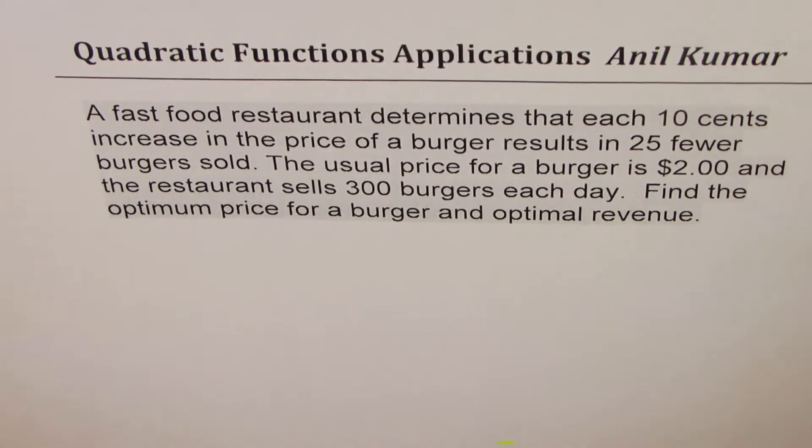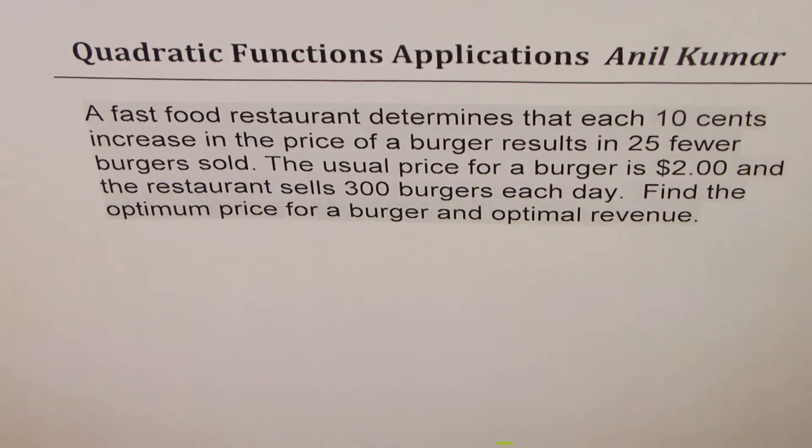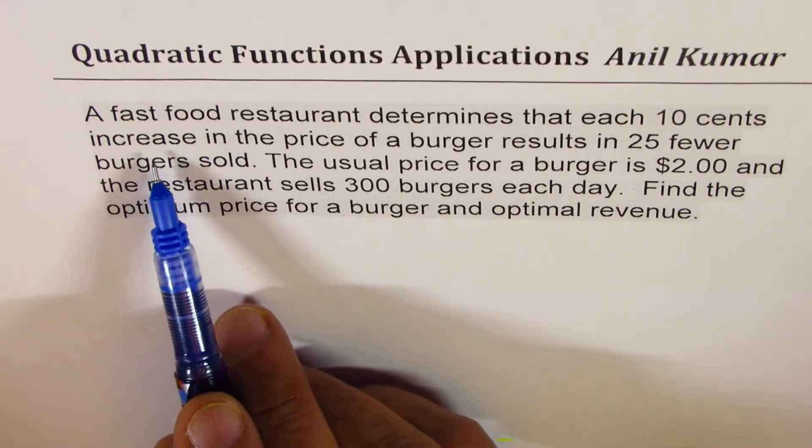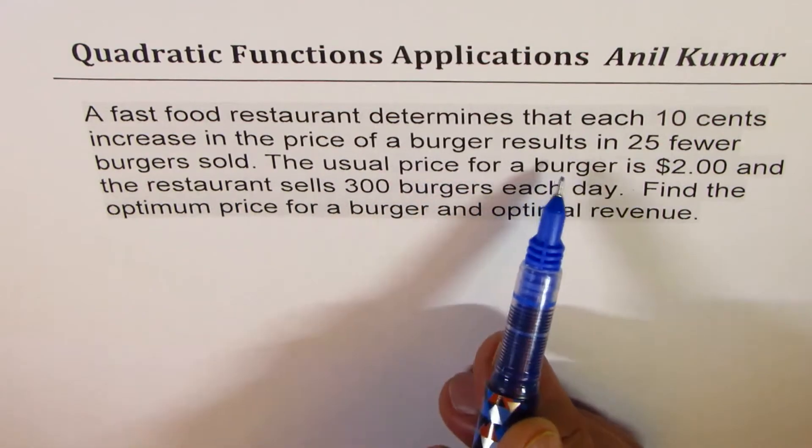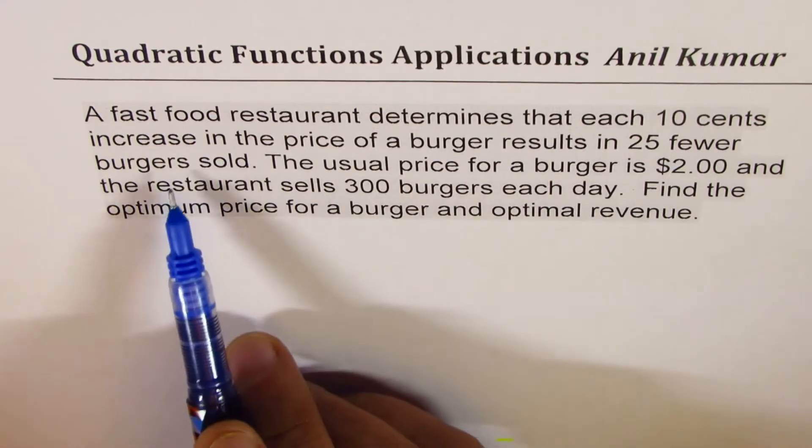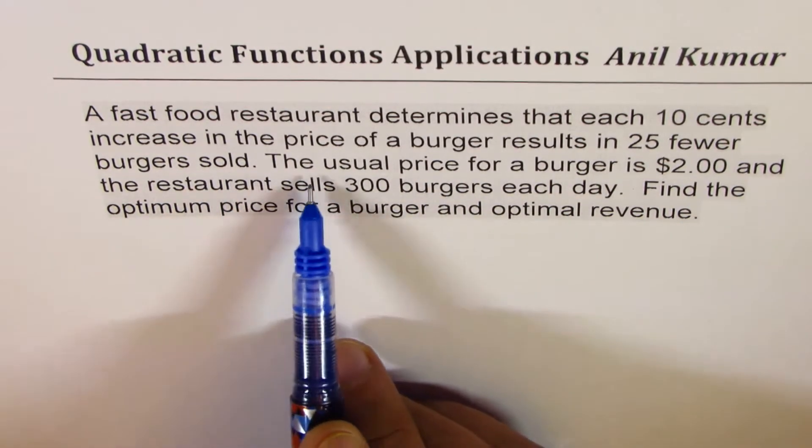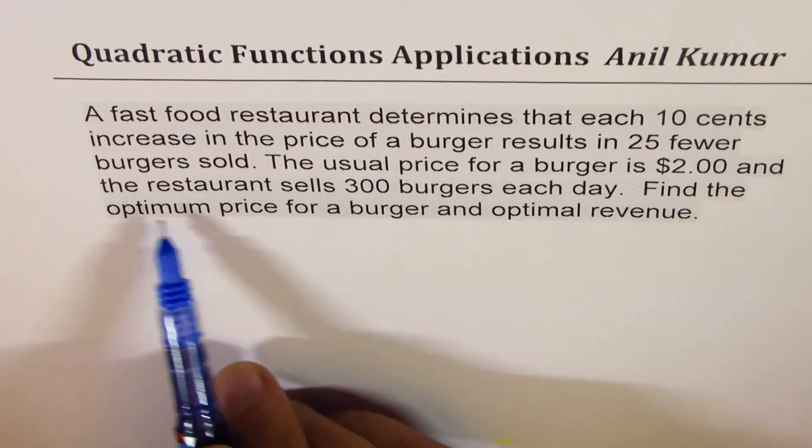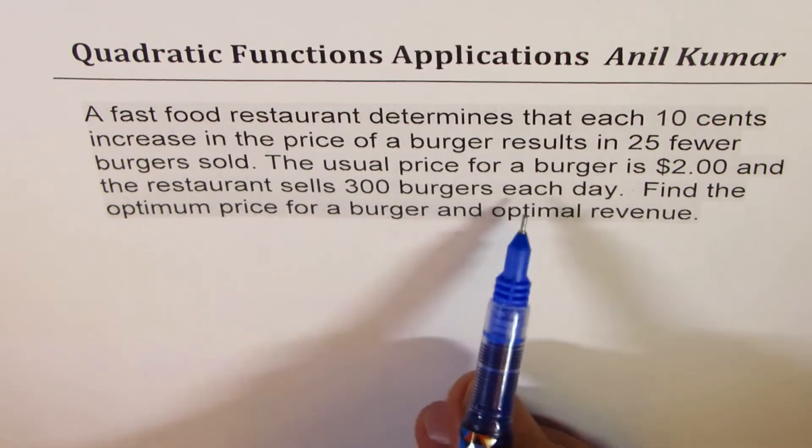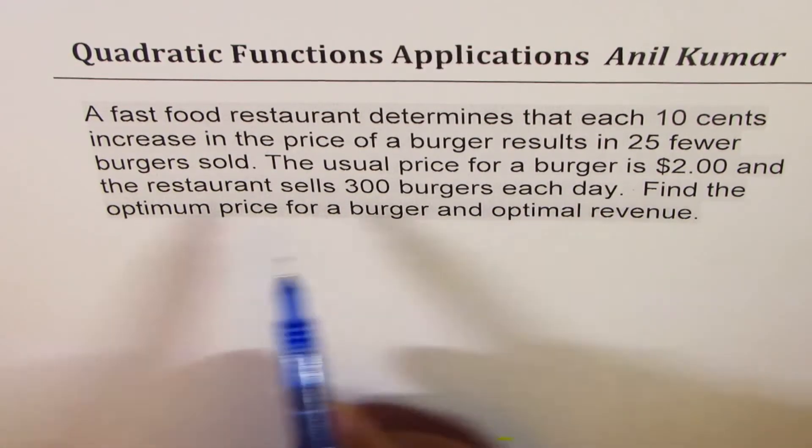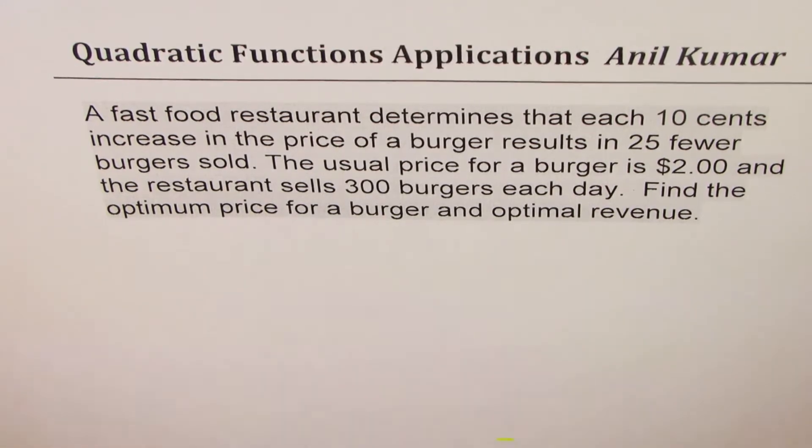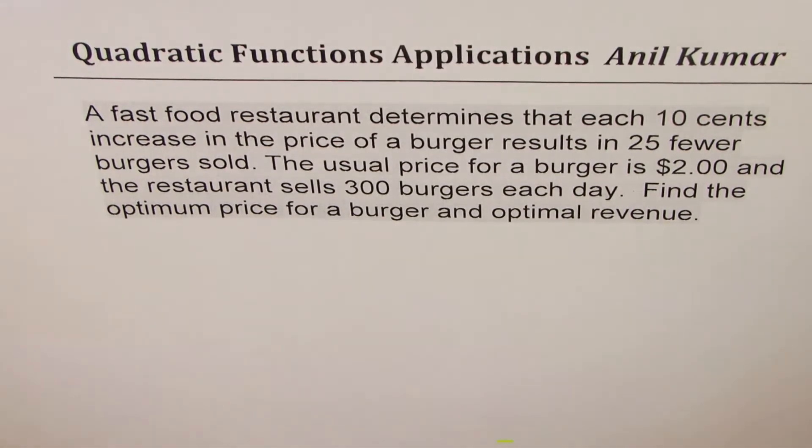You may have to solve similar questions in coming years. The question here is a fast food restaurant determines that each 10 cents increase in the price of a burger results in 25 fewer burgers sold. The usual price for a burger is $2 and the restaurant sells 300 burgers each day. Find the optimum price for a burger and optimal revenue.